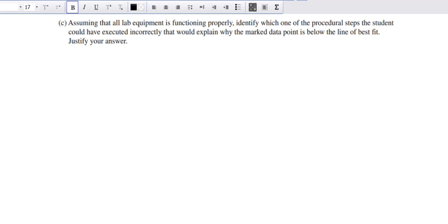And so I think about that as question C comes about. And question C says this, assuming all lab equipment is functioning properly, identify which one of the procedural steps the student could have executed incorrectly to get this, the marked point. So it is exactly what we're seeing. And justify your answer, we need a claim.